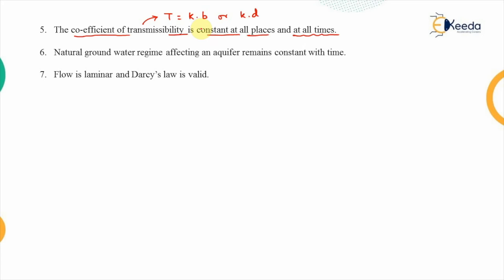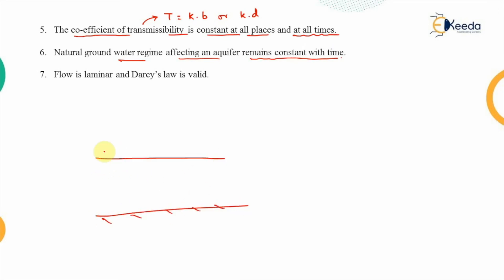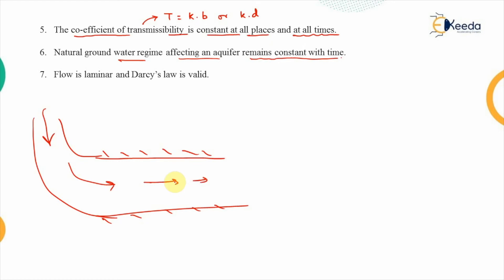The sixth assumption is that the natural groundwater regime affecting an aquifer remains constant with time. For example, if a water body is recharging a confined aquifer, that natural groundwater regime should remain constant with time.